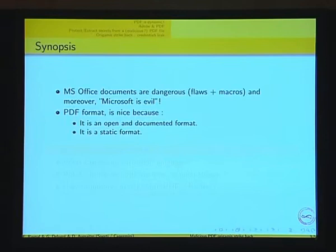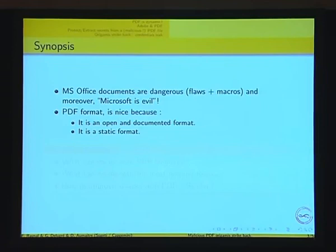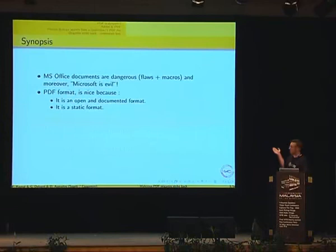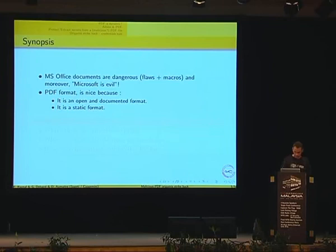Why do we care about PDF? Most people know that Microsoft documents are dangerous — there are macros and lots of flaws in Office documents, and most people believe Microsoft is evil. So you try to avoid Microsoft and go to PDF. You expect it to be better. Why do people usually trust PDF? It's an open document format — lots of information is available about the standard and how it's supposed to work, which was not the case for Office documents. And people believe it's fully static, like a picture, and a picture cannot be harmful.